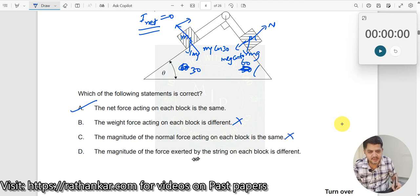Magnitude of the force exerted by the string on each block is different. No, it should be the same. The reason is if it was different, then this would have pulled it by a larger force over here. So therefore this is also incorrect. This would have experienced an acceleration. So since F net equal to 0, A is the right option.